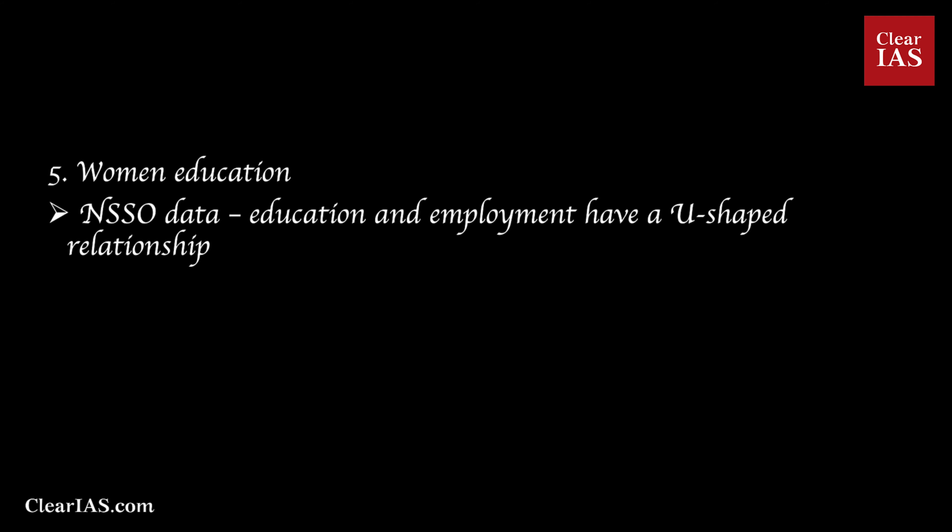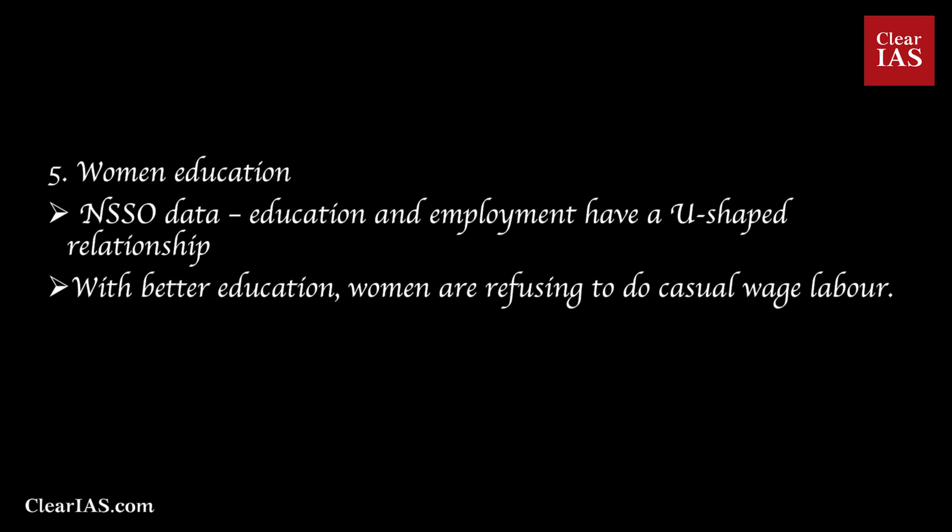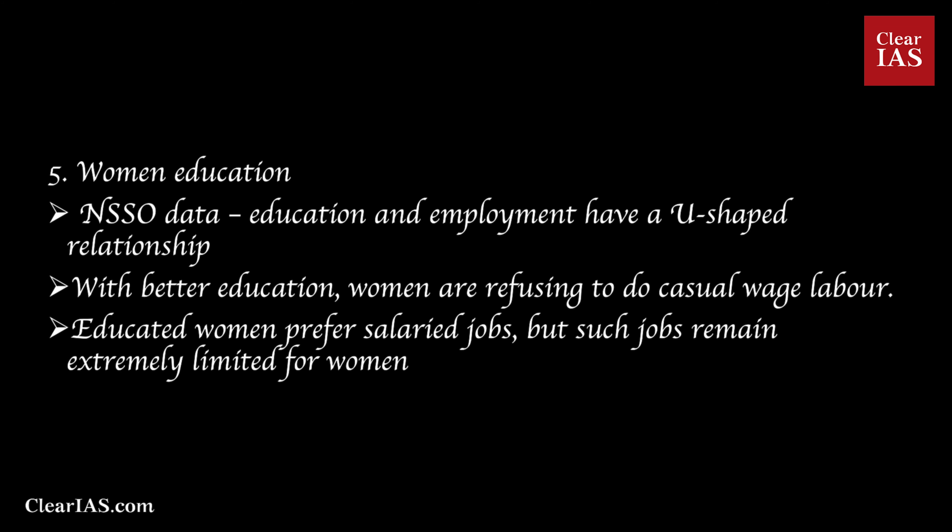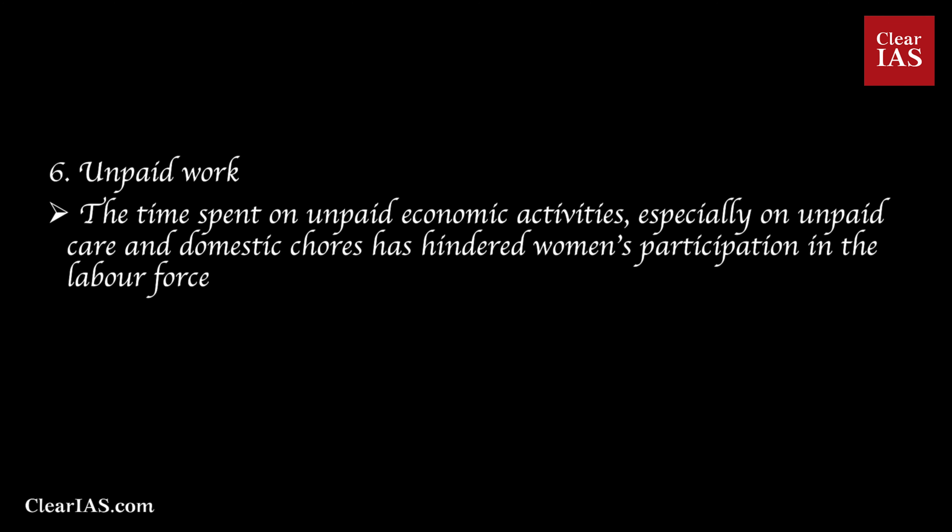Fifth: women's education. There is a negative relationship between women's education and labour force participation rate. Data from the National Sample Survey Office shows a U-shaped relationship between education and employment — a rise and subsequent decline in employment with rising education levels. Work participation drops sharply for women with primary and secondary education and rises only with college-level education. Educated women refuse casual wage labour or farm work, preferring salaried jobs, but such jobs remain extremely limited. For example, among farmers and farm labourers, nearly a third are women, whereas the proportion of women among salaried professionals and managers is only about 15%.